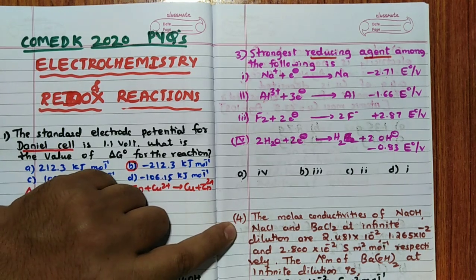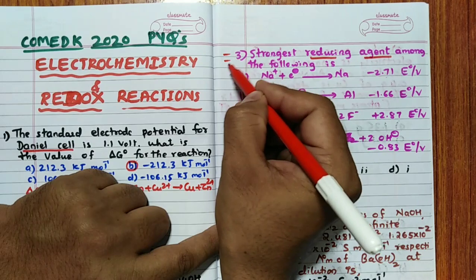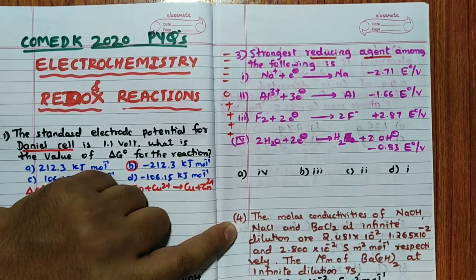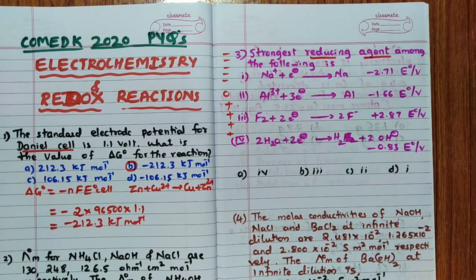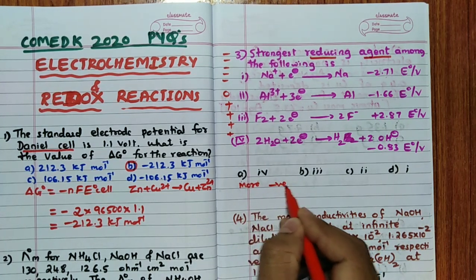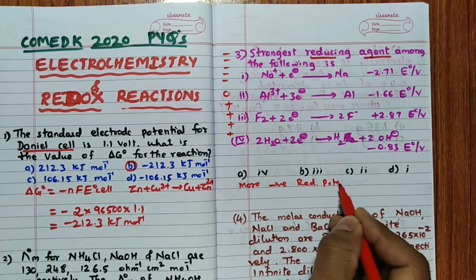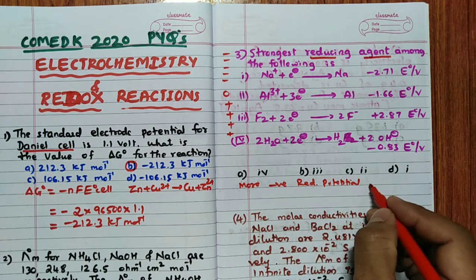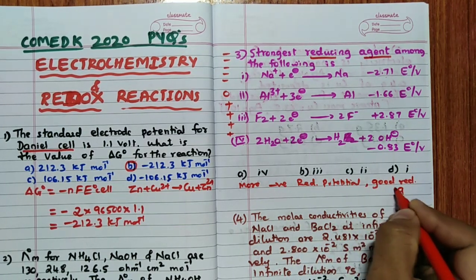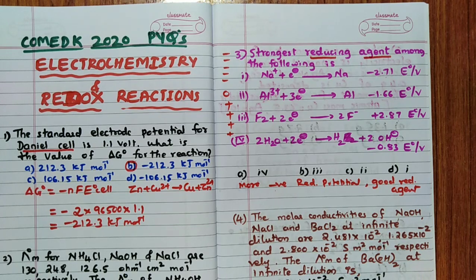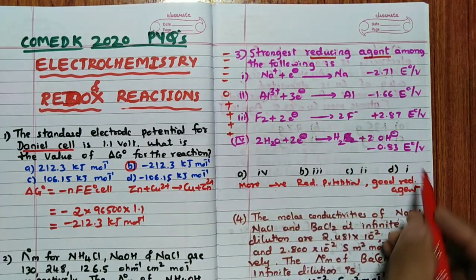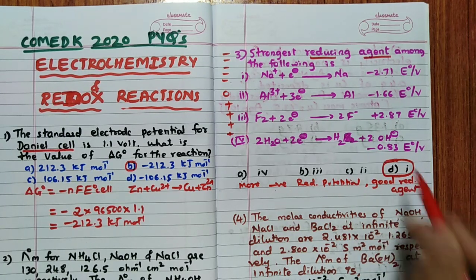In the electrochemical series, moving from minus to plus means oxidizing nature increases; moving from plus to minus means reducing nature increases. More negative reduction potential → better reducing agent. More positive reduction potential → better oxidizing agent. Sodium has the most negative value (-2.71), so sodium is the strongest reducing agent. The answer is option D.